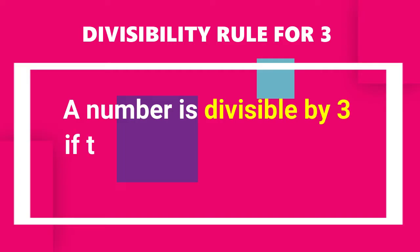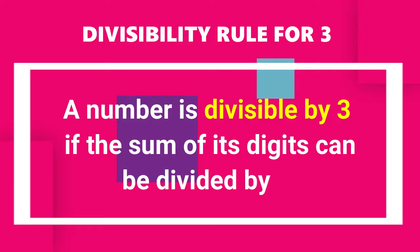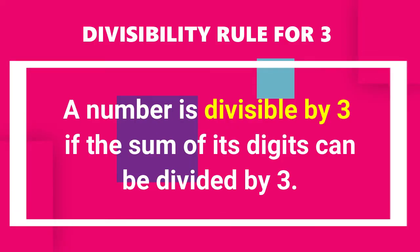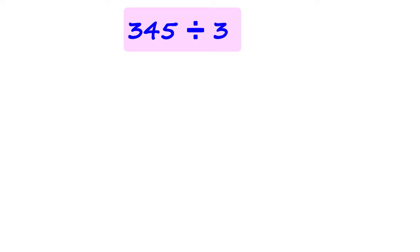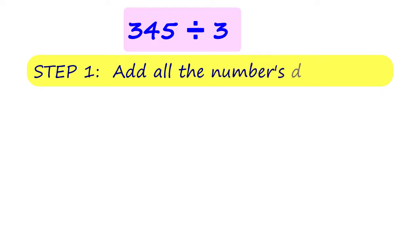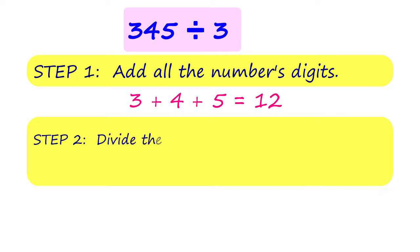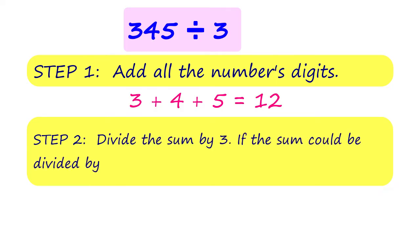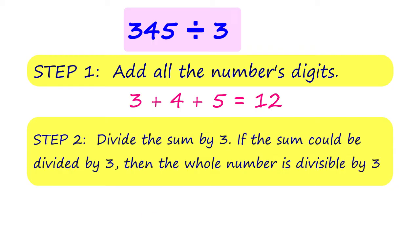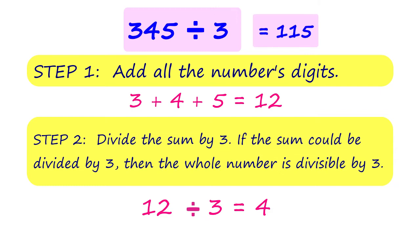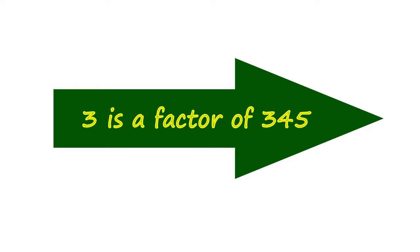A number is divisible by 3 if the sum of its digits can be divided by 3. Is 345 divisible by 3? Let's find out by following the steps. Step 1: Add all the digits of the given number. Step 2: Divide the sum by 3. If it could be divided by 3, then the given number is also divisible by 3. Since 12 is divisible by 3, then 345 could also be divided by 3. That makes 3 a factor of 345.